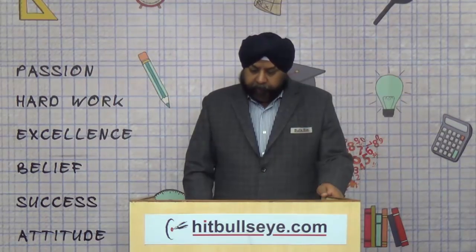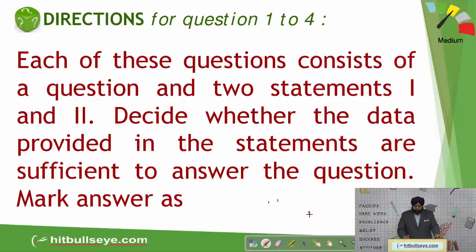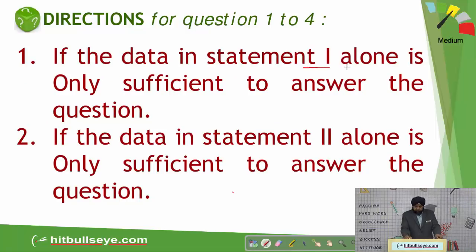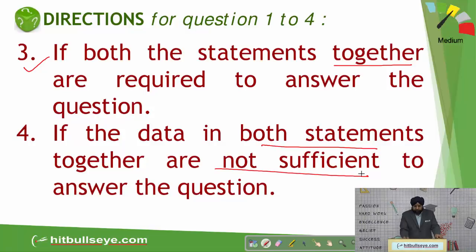Let's look at the first question. Each of these questions consists of a question and two statements, one and two. Decide whether the data provided in the statements are sufficient to answer the question. Mark answer one if statement A alone is sufficient, two if statement B alone is sufficient, three if together they are sufficient, and four if both statements together are not sufficient.